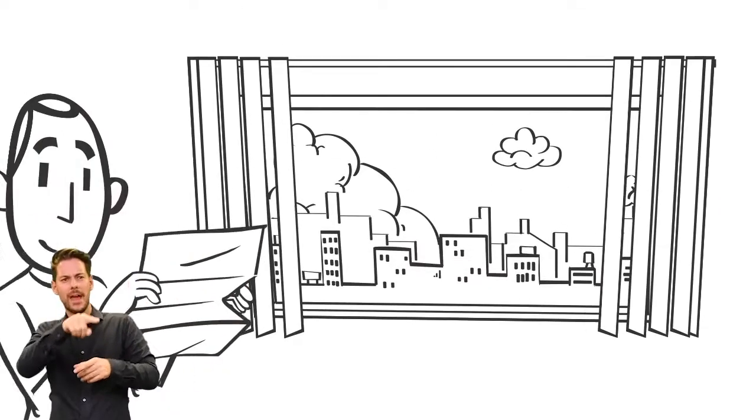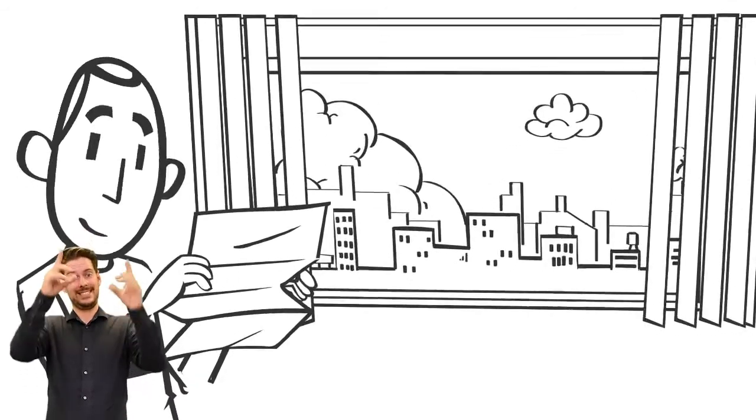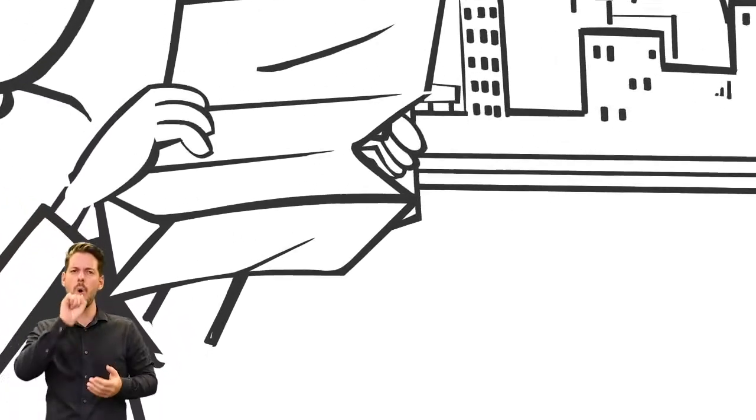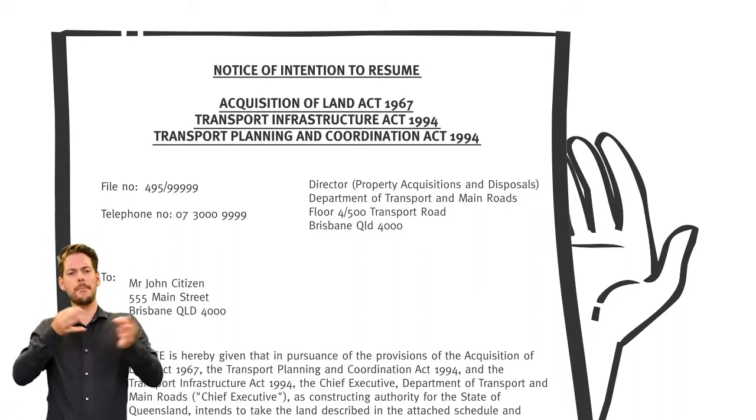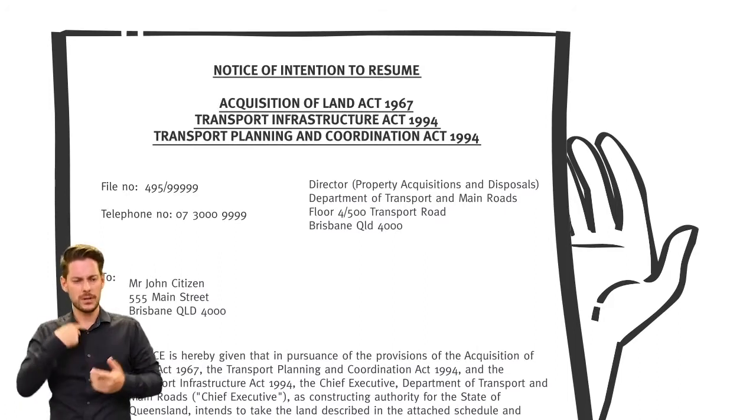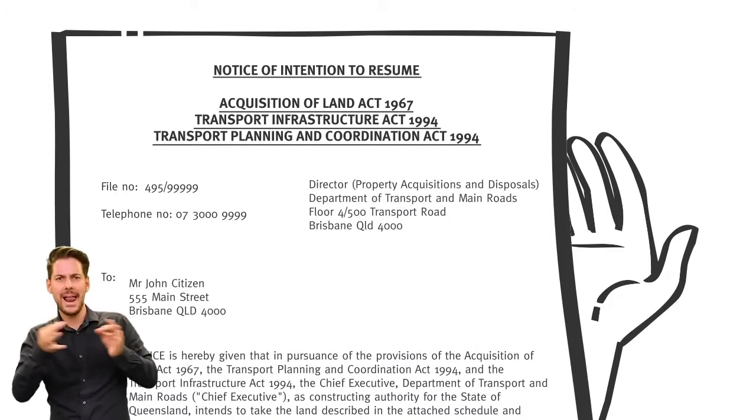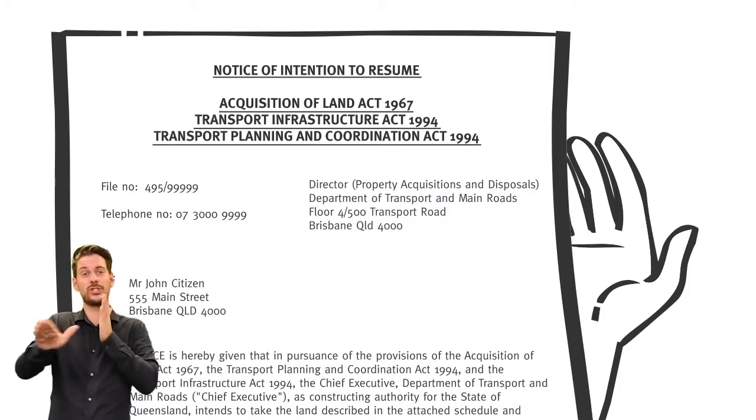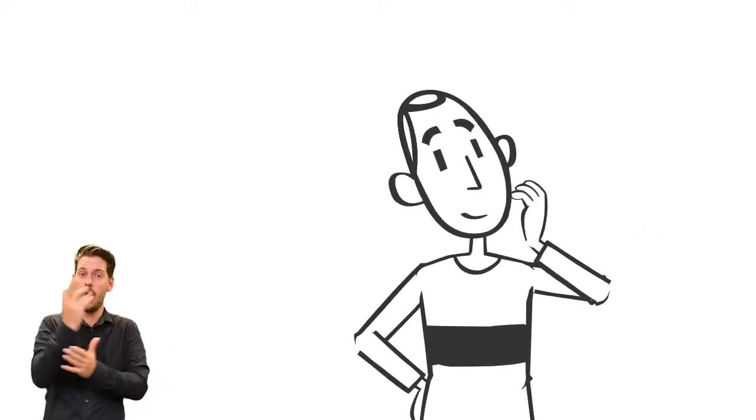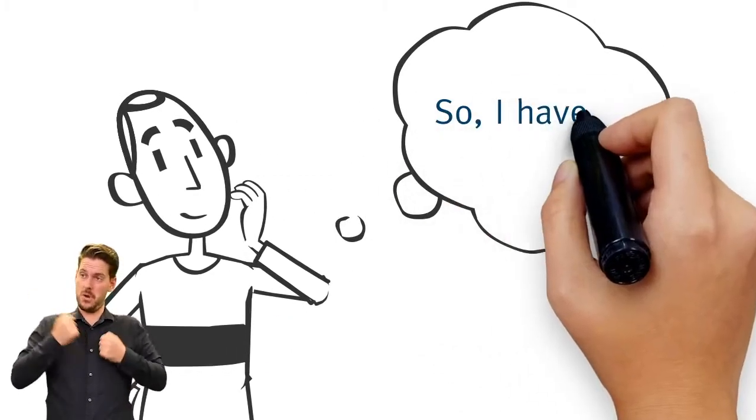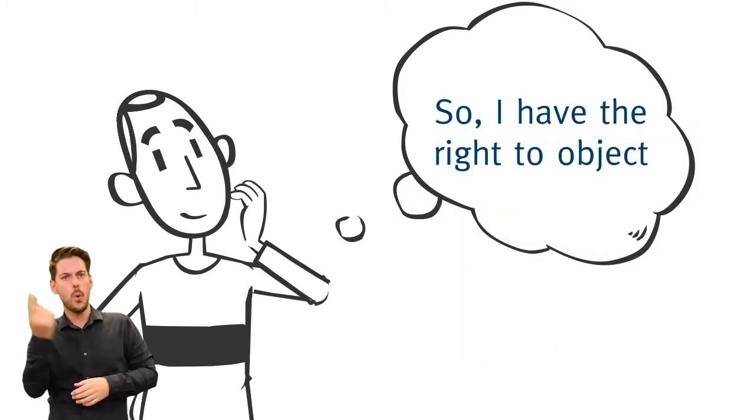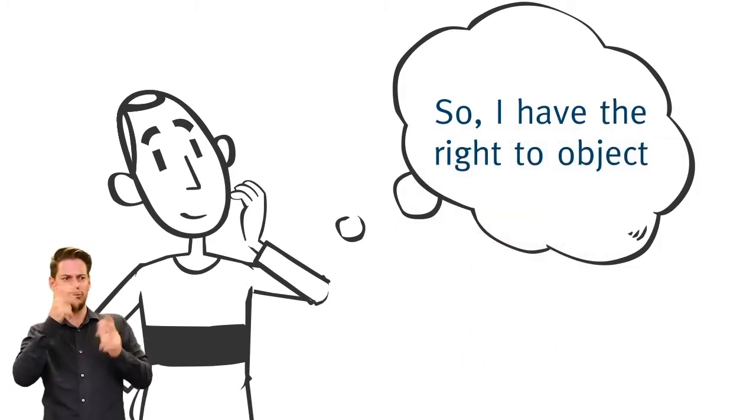When the property resumption process is ready to be commenced, you'll receive a notice of intention to resume. The notice sets out details of the proposed resumption and the procedure to follow if you wish to object. The right to object to the resumption is an important right of the property owner and any other person who holds a legal interest in the property.